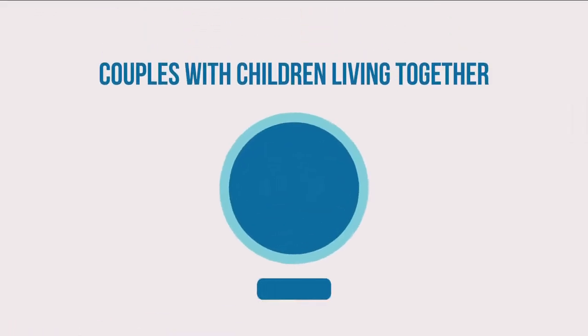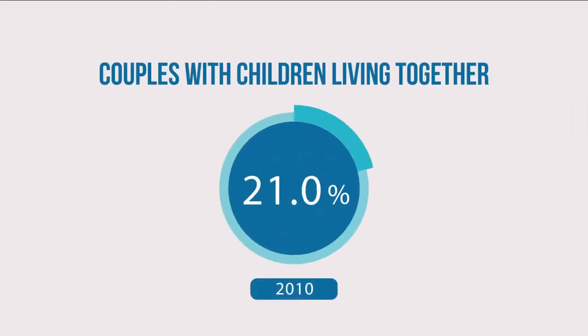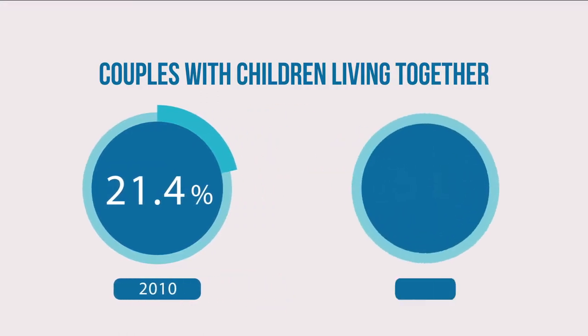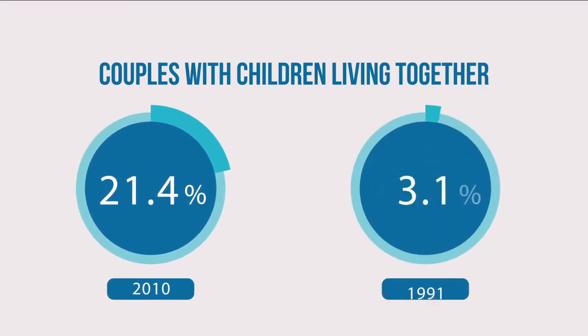In 2010, 21.4% of couples with children lived together in a consensual union, up from 11.6% in 1991.